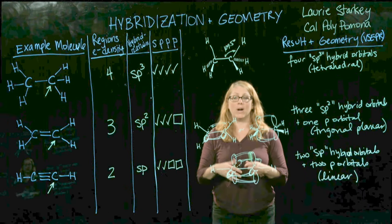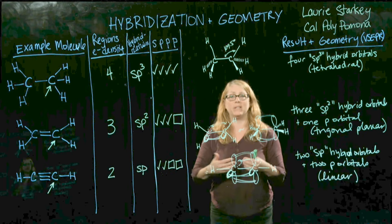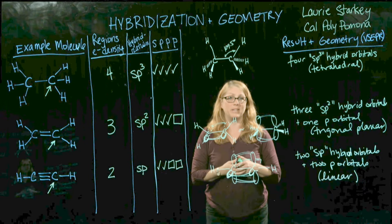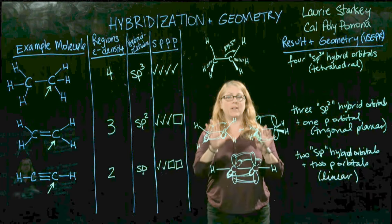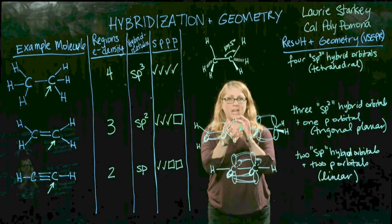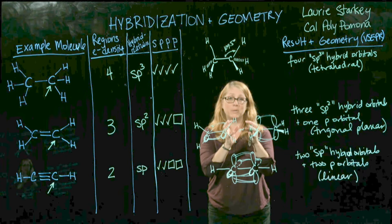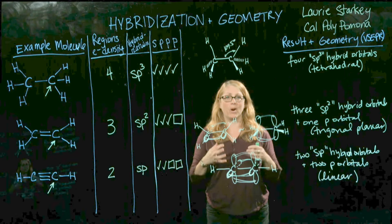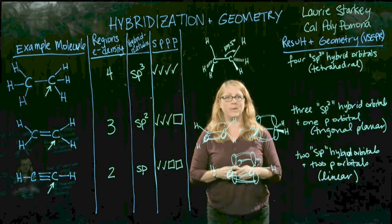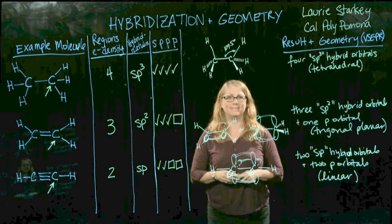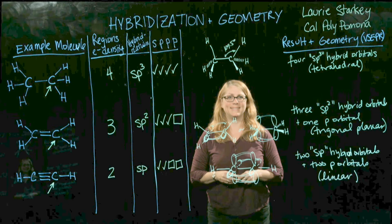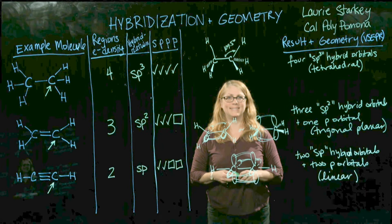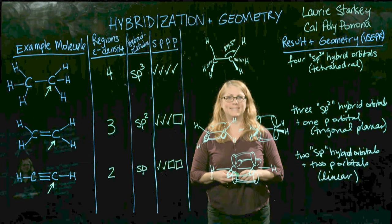So we gradually build up. It starts by deciding what the hybridization is about each atom, then understanding what that geometry looks like about that individual atom. Bit by bit, we can build it up to draw more complex molecules in three dimensions.